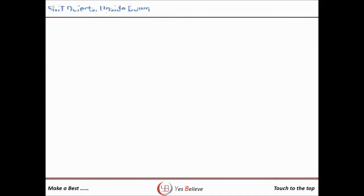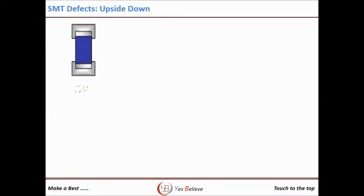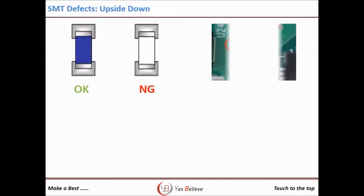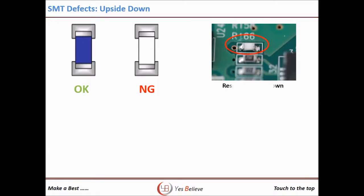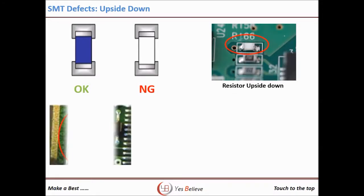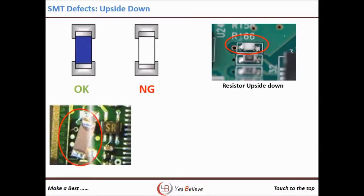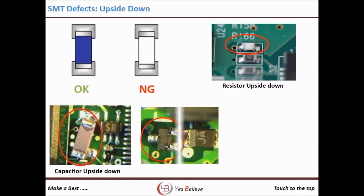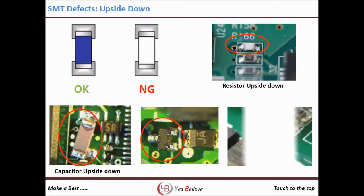Component upside down occurs most often due to the component being flipped over in the feeder during the index function, causing the part to be picked and placed upside down. In the case of no-polarity components there is no functional problem, but in the case of leaded components, no joint is made with the PCB pad.